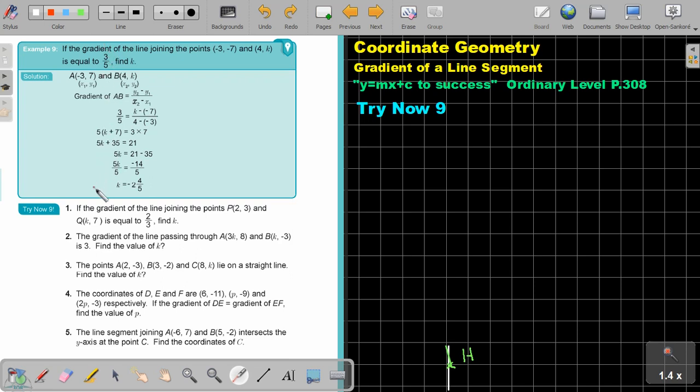Let's look at example 9. If the gradient of the line joining the points negative 3 and negative 7 and k and 4 and k is equal to 3 over 5, find k.